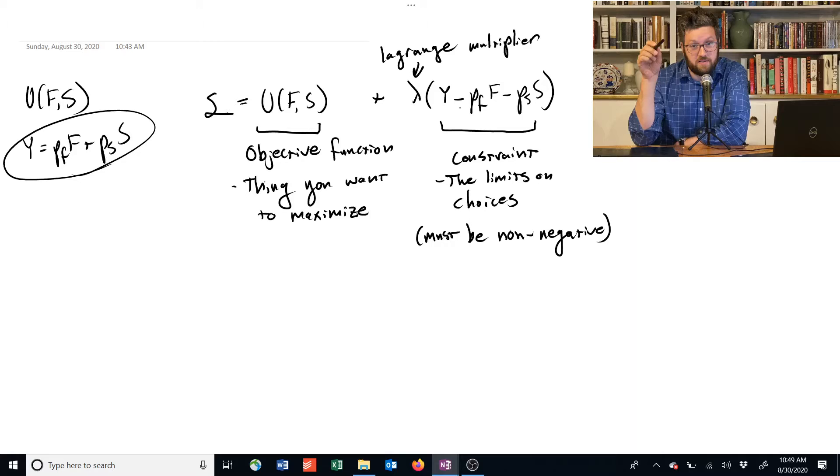But it also means that this constraint could be equal to zero exactly, and that's the typical situation. That means that you're exactly spending all your income, and if you subtract your expenditure, which is PF times F and PS times S, away from your income, there's nothing left over.